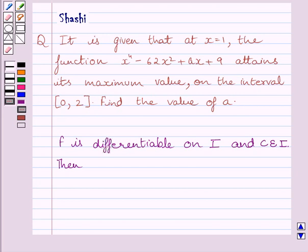First of all, let us understand that if we are given a function f which is differentiable on closed interval I and c is any interior point of the closed interval I, then f'(c) is equal to 0 if function f attains its absolute maximum value at c. Or simply we can say, if function f attains its maximum value at c.